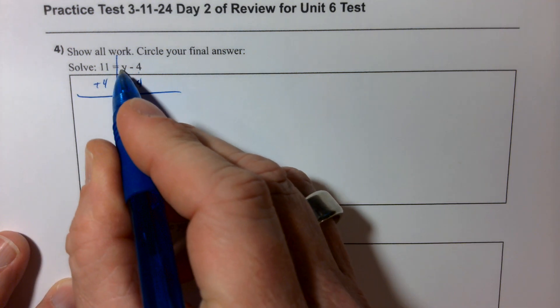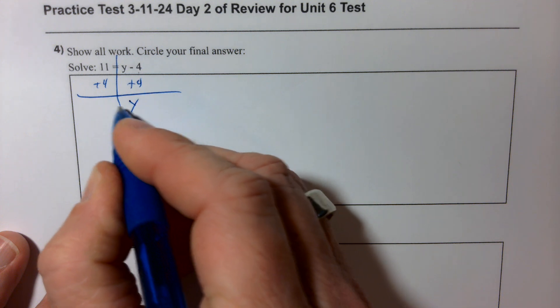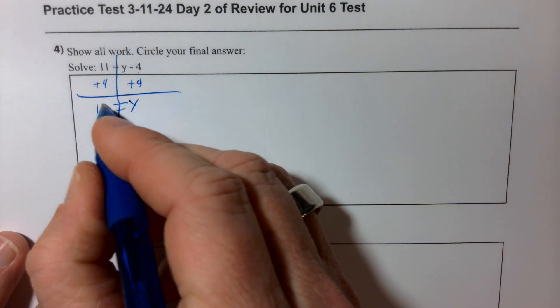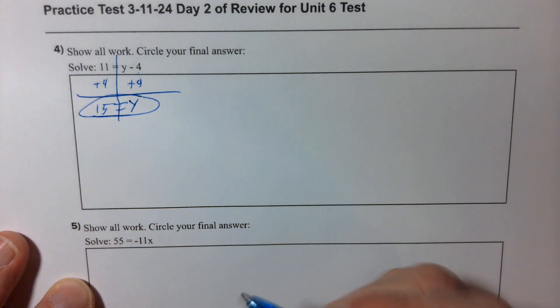And when I do that, y minus 4 plus 4 is simply y. And then 11 plus 4 is 15. 15 equals y or y equals 15.